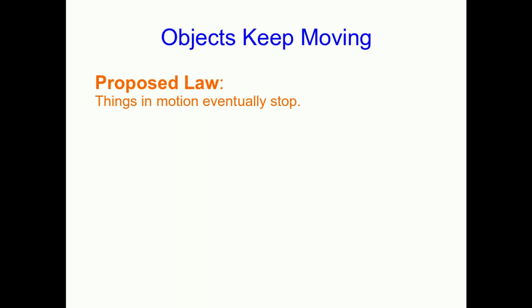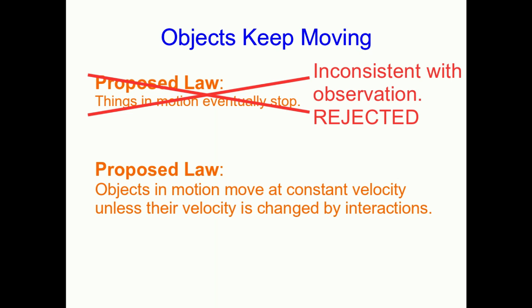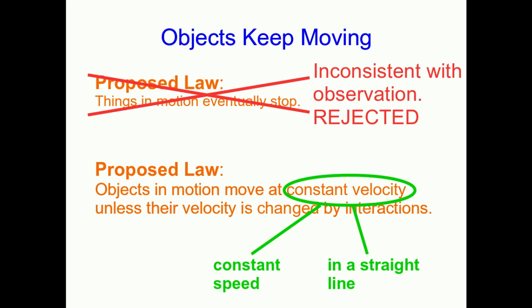Where does this leave us with our proposed law? I hope you see that this tells us this proposed law was wrong. It's inconsistent with our observations. We have to reject it. Things don't just eventually stop. Certainly not of their own accord. There are interactions that may or may not bring them to a stop. And we even have ways to get rid of or at least minimize those interactions. So here's a new proposed law: objects in motion move at constant velocity unless their velocity is changed by interactions. Note there's a phrase in there that is loaded with meaning. Constant velocity. Remember that doesn't just mean constant speed. It also means constant speed in the same direction. Or in other words we're saying that in the absence of interactions things move at constant speed and in a straight line.